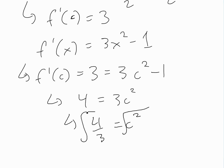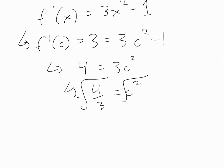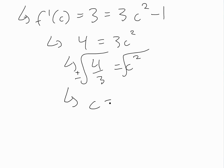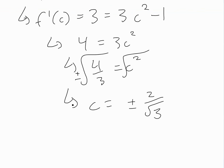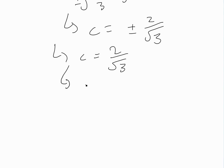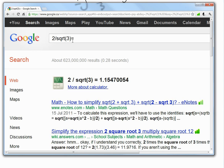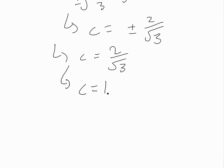Taking the square root of both sides, we get c equals plus or minus the square root of four over three, which is plus or minus two over the square root of three. Since we're only looking at values inside the interval from zero to two, we discard the negative and take only the positive: c equals two over root three, which is approximately 1.1547.